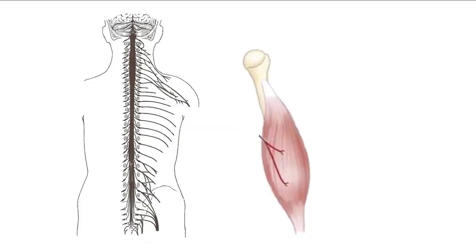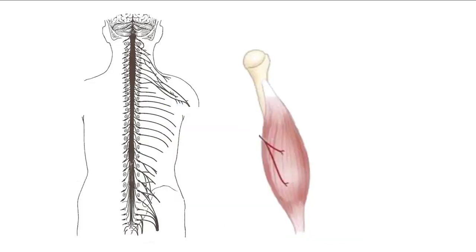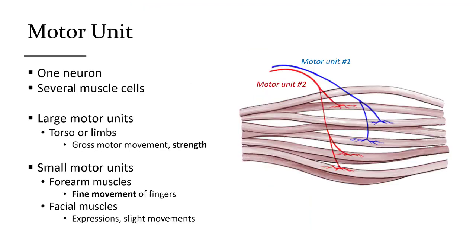For skeletal muscles, the stimulus begins with the brain, as these muscles are voluntary. The impulse travels down the spinal cord, out the spinal nerve, and branches onto individual muscle cells. Within a whole muscle, a single nerve called a neuron branches to stimulate a group of muscle cells — this is called a motor unit.